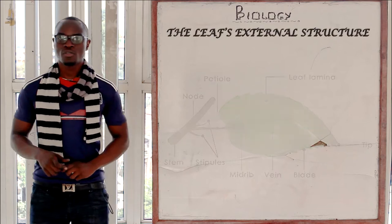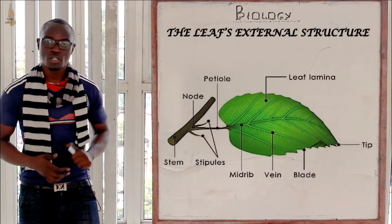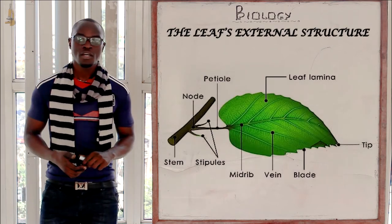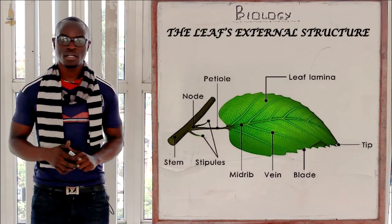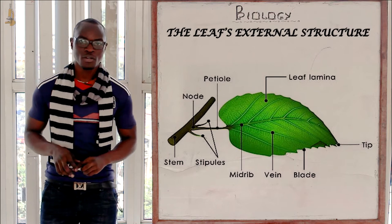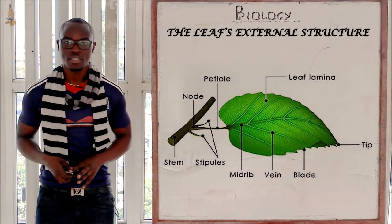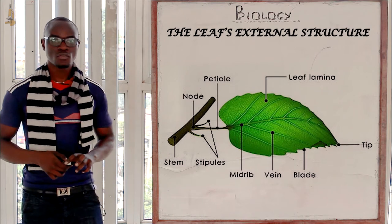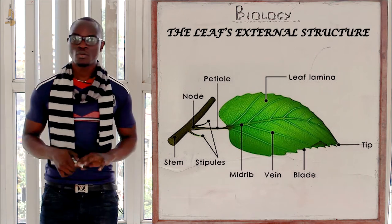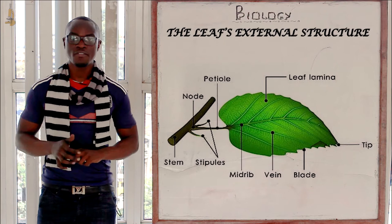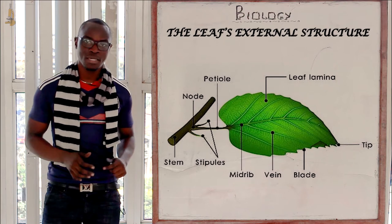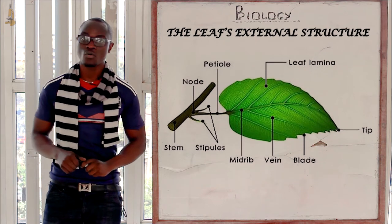Welcome again to this next class where today we are going to continue on our nutrition topic. Today we are going to discuss the leaf. Let's look at the external structures of the leaf and we are going to begin with the lamina.